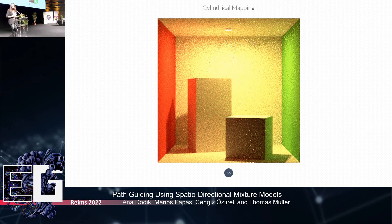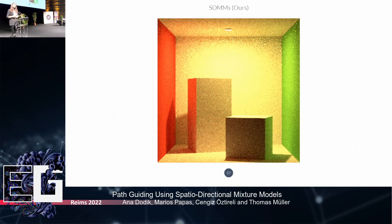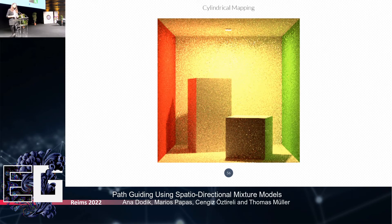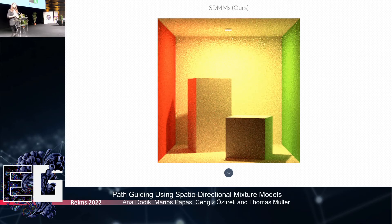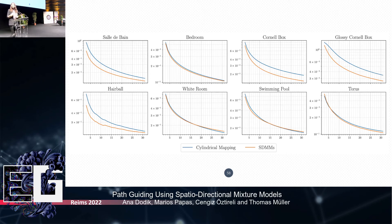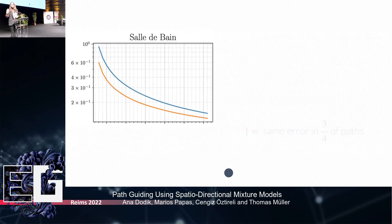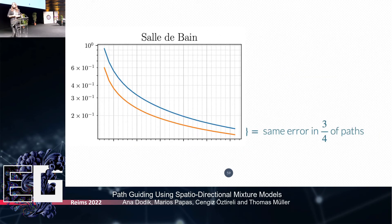Having shown how to define and optimize the model, we integrate it into a radiance-guiding rendering method. Comparing rendering using the simple cylindrical mapping versus the SDMM version, the result improves significantly — cycling between the two, the SDMM version is clearly superior. The error plot shows the x-axis as number of render iterations and the y-axis (logarithmic) as error at that iteration. Zooming into one of the scenes with the largest improvement, we can achieve the same quality with 25% fewer paths.